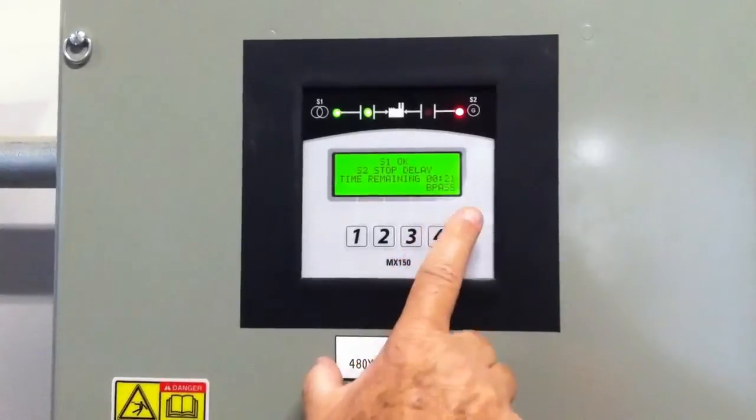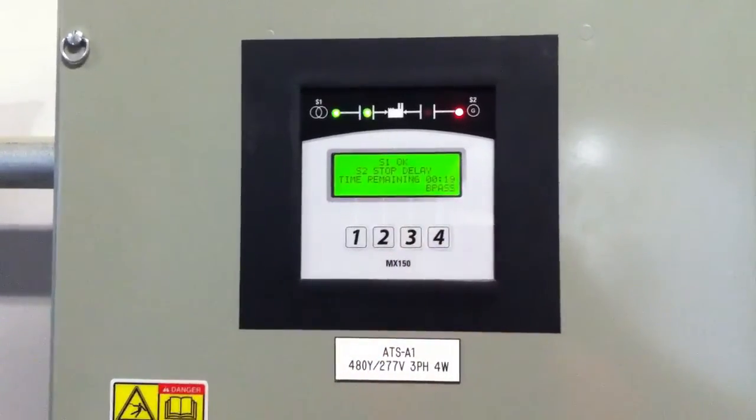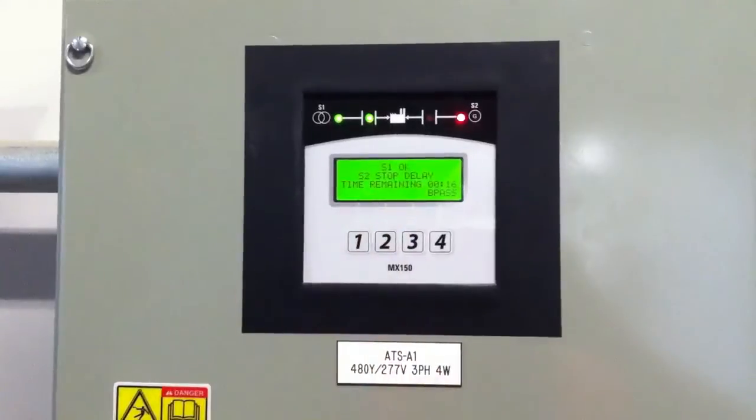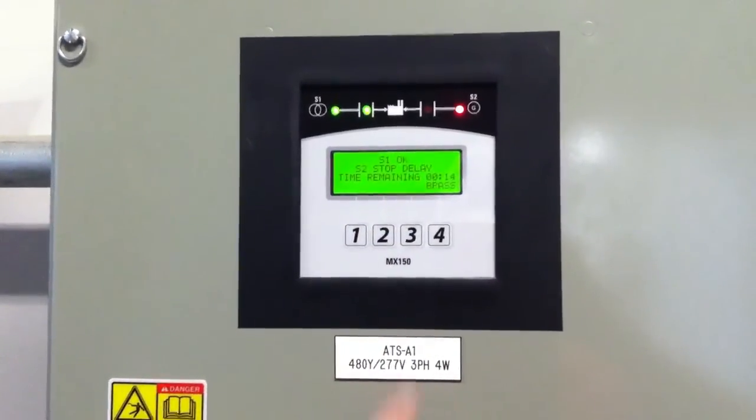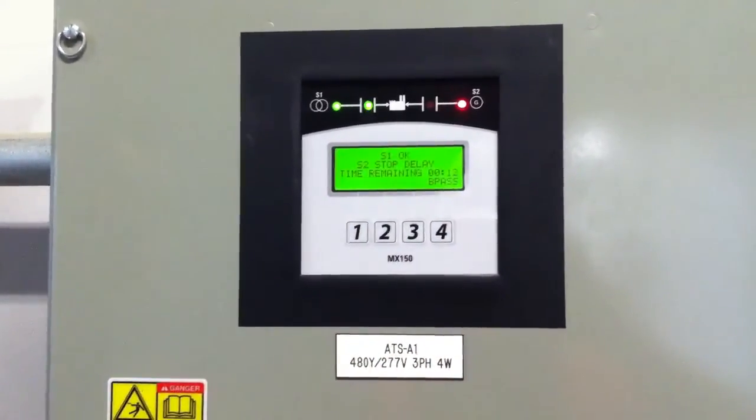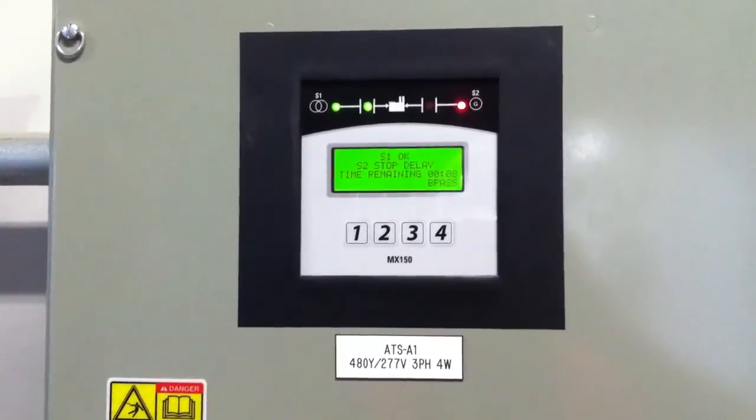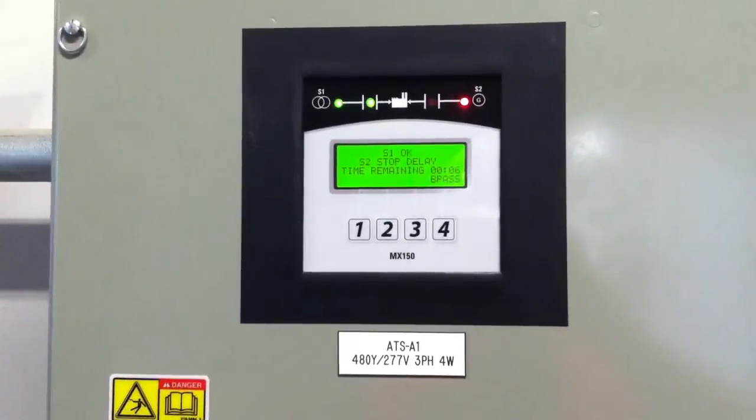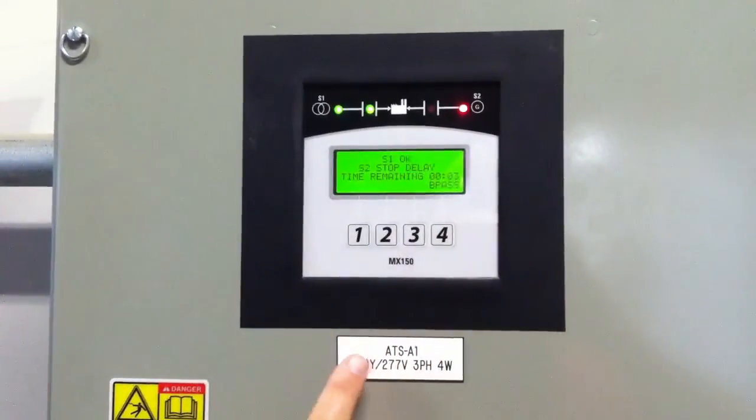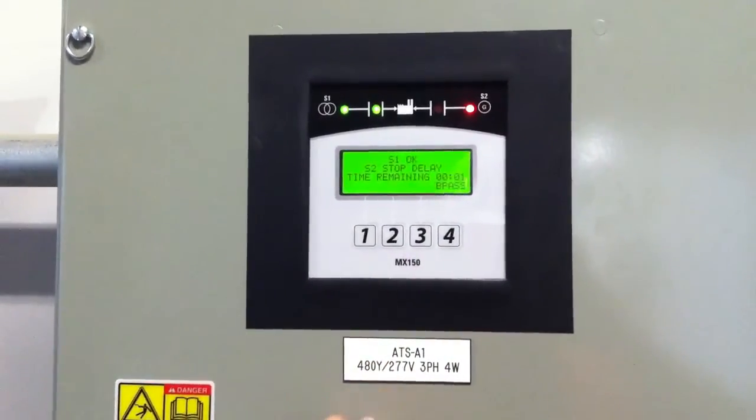And now we're in a 30-second cool-down on the engine. It's what we call S2 stop delay. The normal operation is five minutes on the stop delay, so that we cool the engine properly after it's been on load. So again, here in another roughly 10 seconds, we'll go ahead and it'll shut off normally. And since we didn't affect any operation with the generator, it's still in the auto position, we have nothing enunciated on the panel.